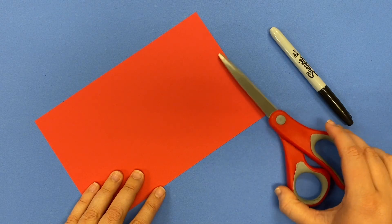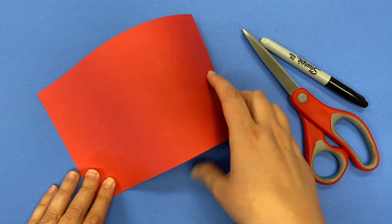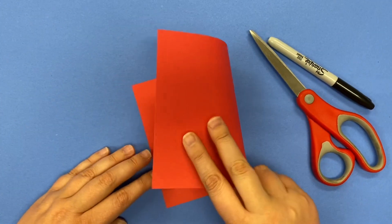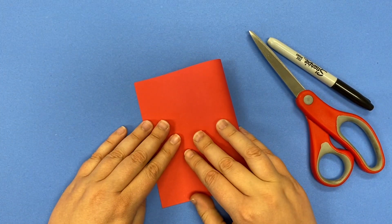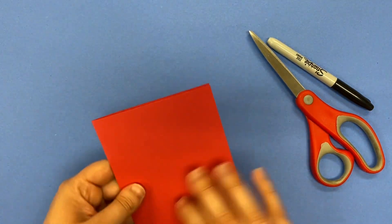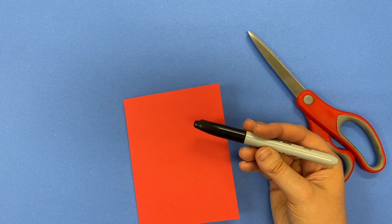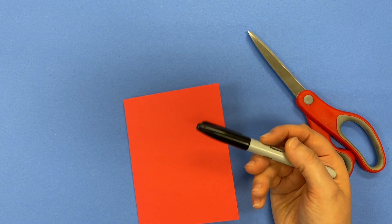I'm going to show you two different ways to make a Stabile and the first way you're going to fold it in half. So you'll take your paper and fold it in half and then I'm going to be drawing my lines where I'm going to cut with a sharpie.